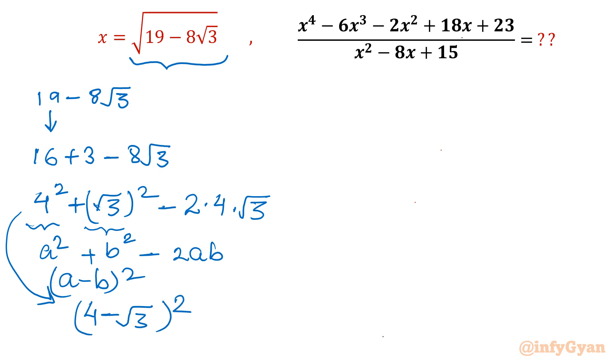So I can write our expression (4 - √3)^2. Okay, so now let's write our x. x value will be square root of (4 - √3)^2. Now I can cancel square and square root. So what I will get: 4 - √3.